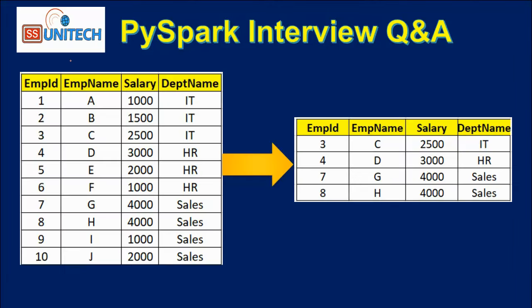We have an input dataframe containing four columns total. The department column has IT, HR, and Sales departments. In the output we are picking employees who are getting the highest salary in their department. For the IT department, employee ID 3 is getting the highest salary. For HR, ID 4 is getting the highest. For Sales there is a tie at 4000 salary for ID 7 and ID 8, so both rows are returned.